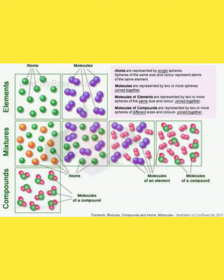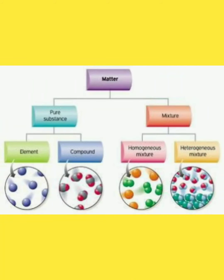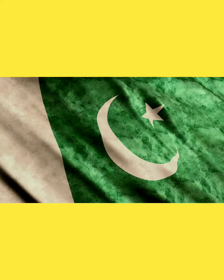This is the classification of matter. A pure substance can be an element — where all atoms are the same — or a compound — where different atoms are bonded. A mixture is a combination of many types of atoms that are not bonded together. Mixtures can be homogeneous, like mineral water, or heterogeneous, like ice cream.